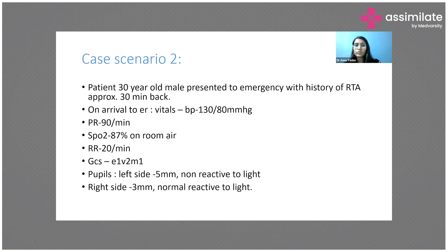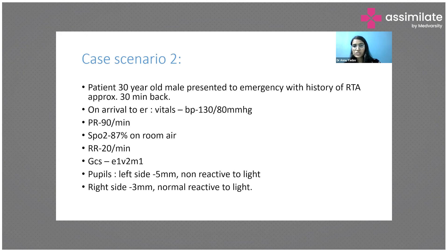Now regarding the pupils: left side 5 mm, right side 3 mm — that means there is anisocoria. Since the patient is hemodynamically stable and has been intubated, the patient can be taken to CT scan. However, in peripheral centers without neurosurgical intervention capability, it is better to transfer the patient rather than wasting time on CT scan and other formalities. If you are in a tertiary care center with a neurosurgeon available, proceed with a CT scan of the brain.